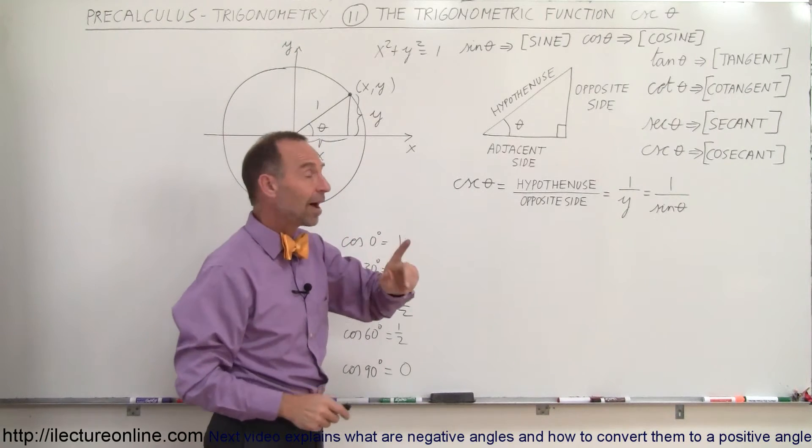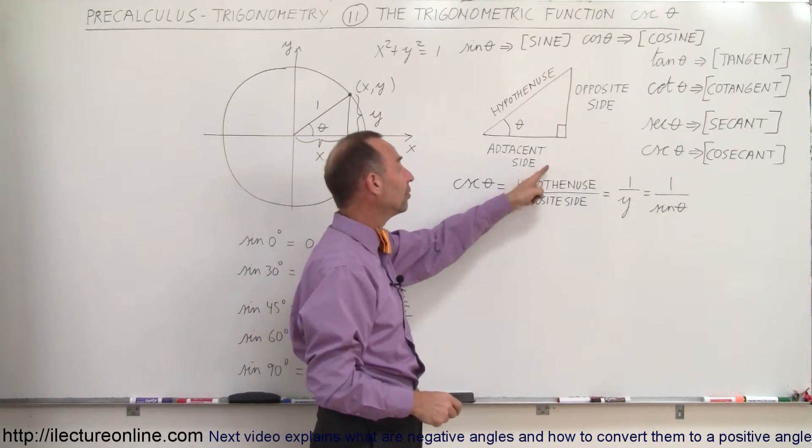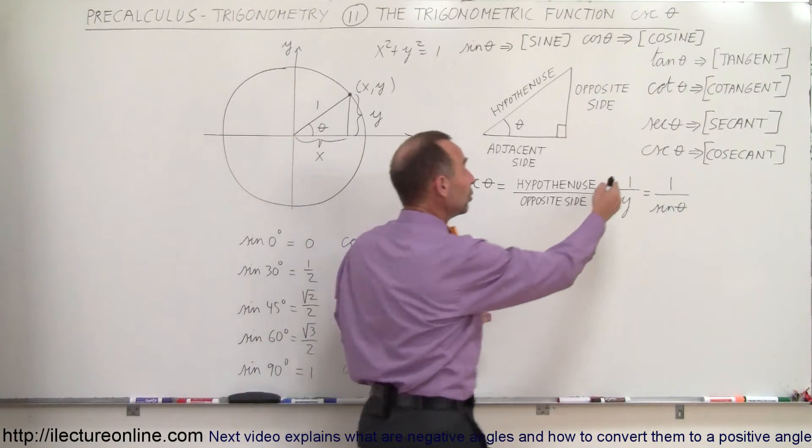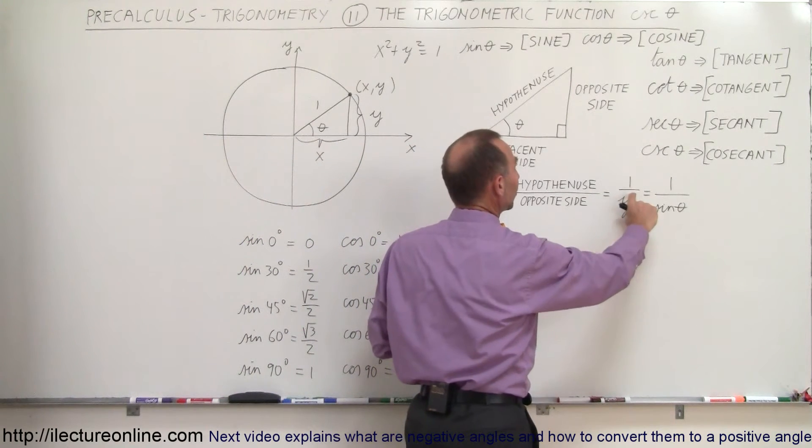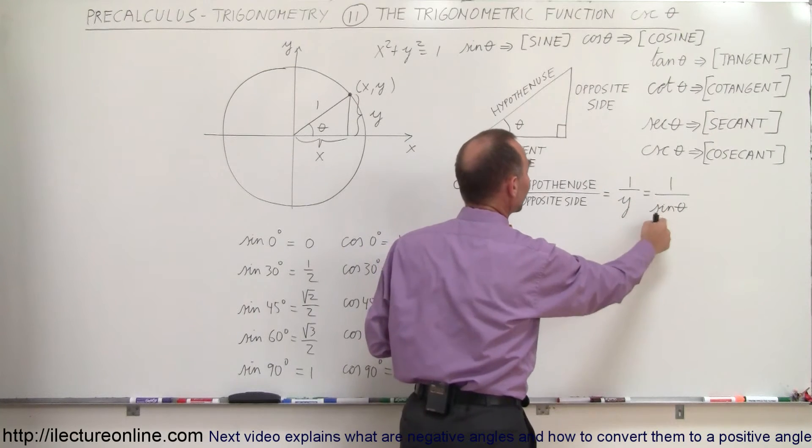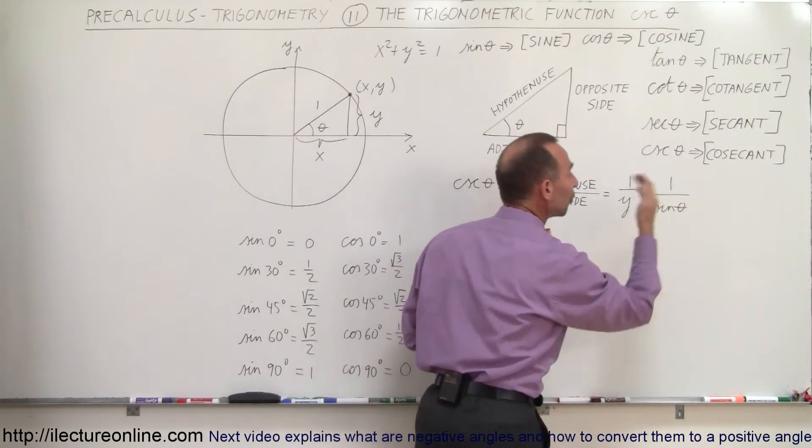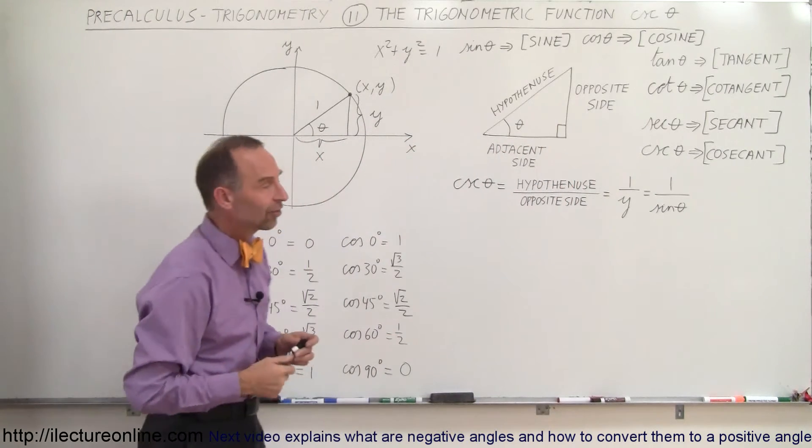In this case, the cosecant of theta is defined as the ratio of the hypotenuse divided by the opposite side. The hypotenuse is equal to one in the unit circle, and the opposite side is equal to y. Since we know that y is defined as the sine of theta, we can see that the cosecant of theta is equal to the inverse of the sine of theta, or one over the sine of theta.